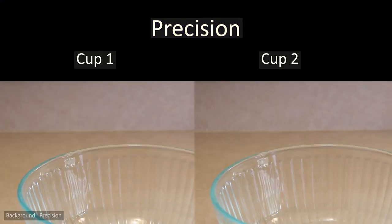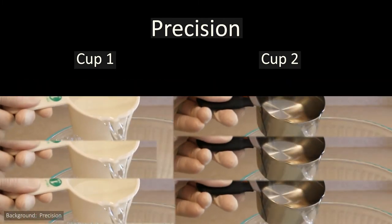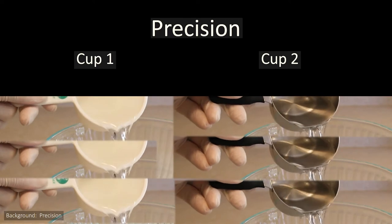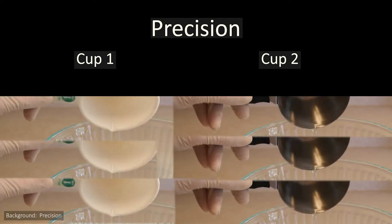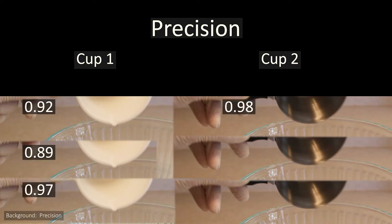Going back to our measuring cup example, let's say you measured out not one, but three cups of water with each measuring cup, and you determined the actual quantity of water you dispensed each time. The first cup actually gives you 0.92, 0.89, and 0.97 cups of water, while the second cup gives you 0.98, 0.97, and again, 0.98 cups of water.